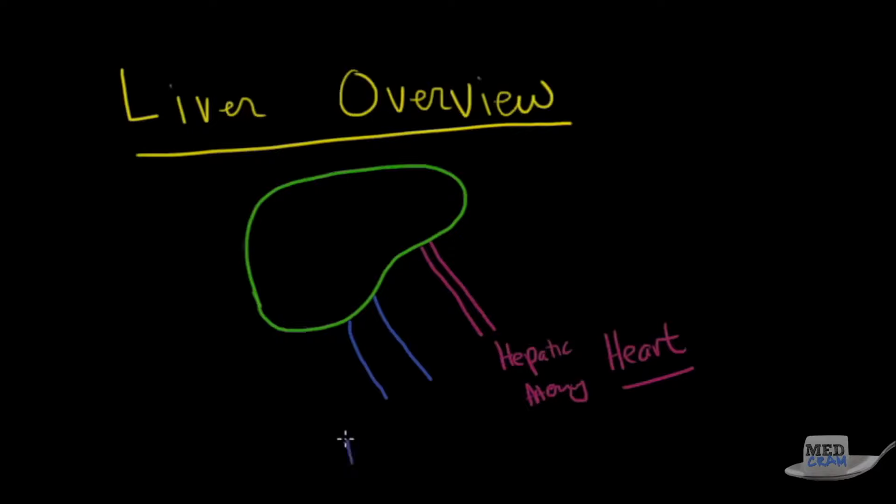The other input is the portal vein. And this is coming from the intestines. And this is important because a lot of medications that you ingest, like pills, the first place that they go is to the liver. And so the metabolism of these medications first occur in the liver. This is called first-pass metabolism. And then they go on to the heart. And that's the next part of the drawing here. You get the hepatic vein. And so you've got two inputs and one output. And so it's got to go through the liver if it's coming from the portal vein from the intestines.